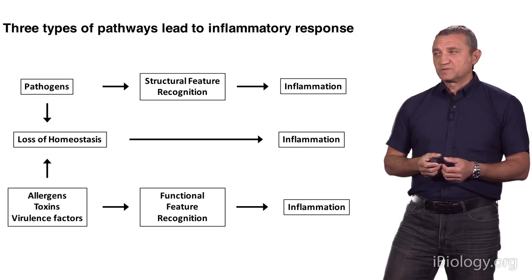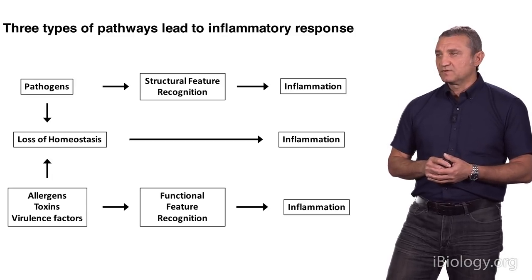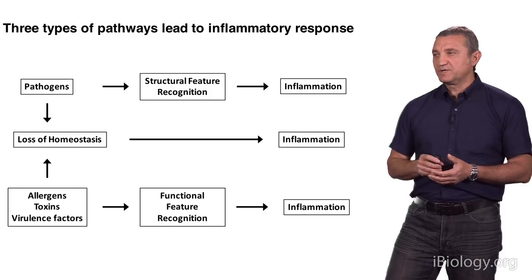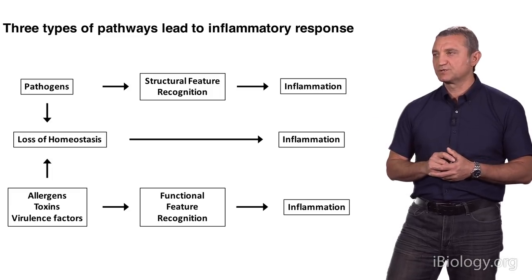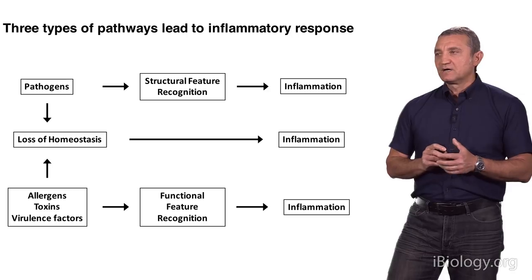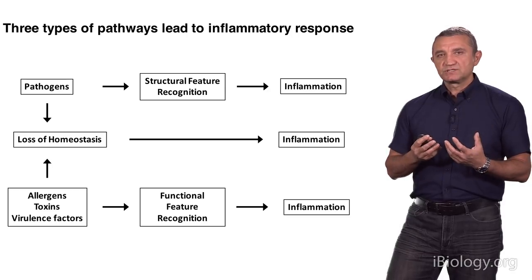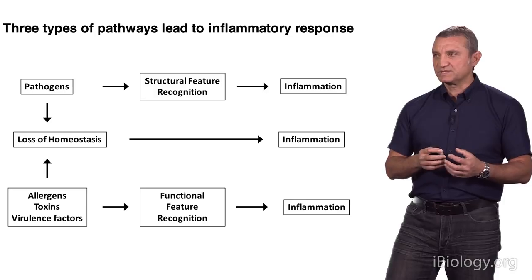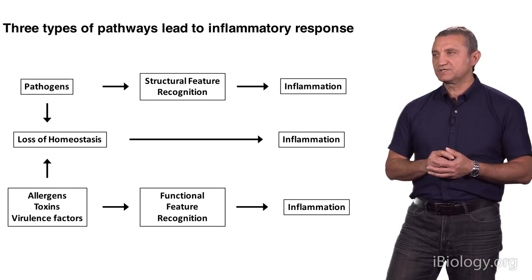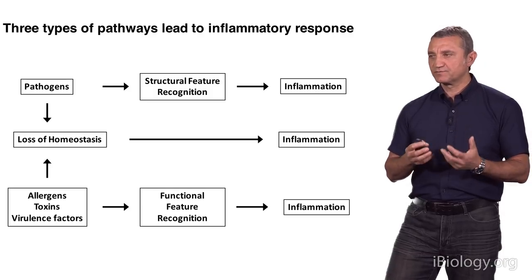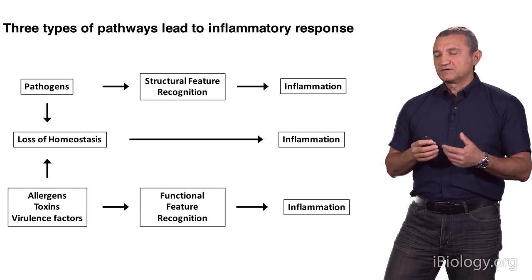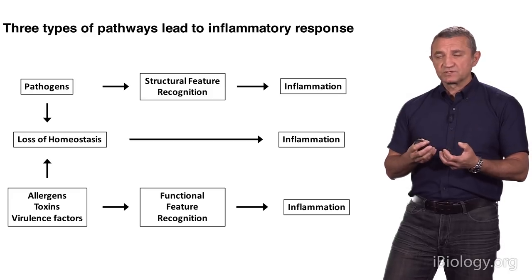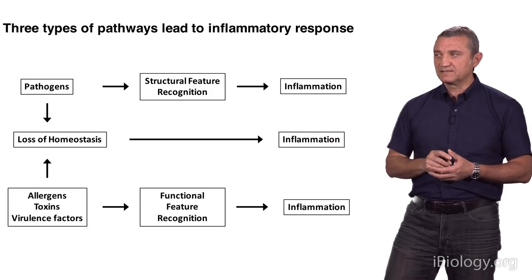The causes of inflammation from that perspective: loss of homeostasis per se is sufficient to lead to inflammation. In addition, there could be exogenous perturbations that lead to loss of homeostasis — the two major types being pathogens during infection, as well as toxins, allergens, and virulence factors produced by pathogens. Both pathogens and toxins can cause loss of homeostasis, leading to inflammation.